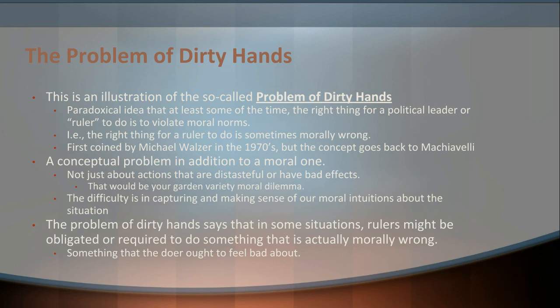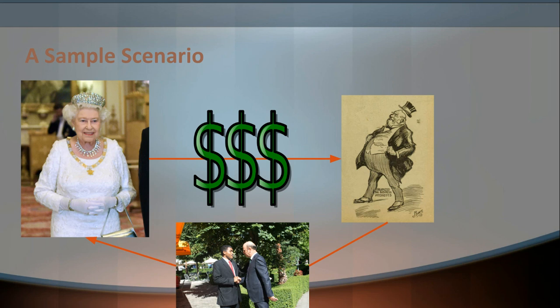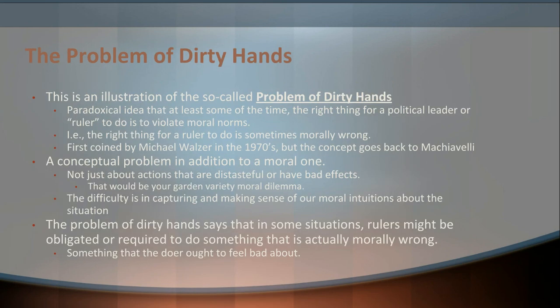This is an illustration of the problem of dirty hands, which is our main focus for today. The problem of dirty hands is the paradoxical idea that at least some of the time, the right thing for a political leader or ruler to do is to violate moral norms — that is, the right thing to do for a ruler is sometimes morally wrong. This problem was given its name by Michael Walzer in a 1973 paper, but the concept goes back much further, probably most famously to Machiavelli in his work The Prince.